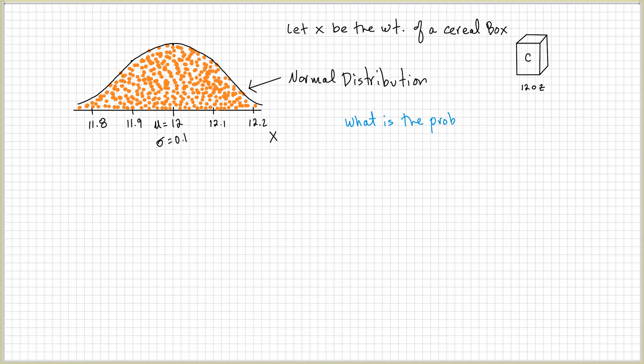The question is, what is the probability of choosing at random a box at the store with more than 12.2 ounces? So, what's the probability of a cereal box that has a weight greater than 12.2?